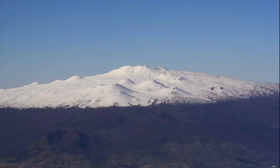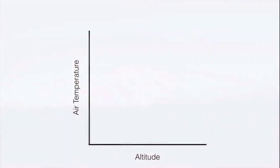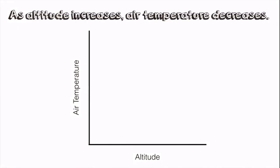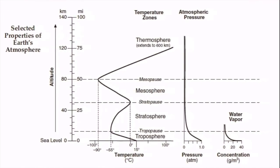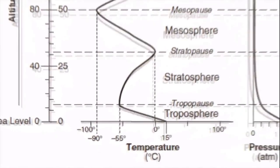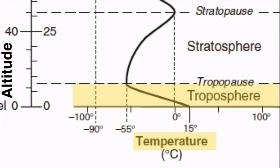Temperature decreases with altitude. If I were to look at that as a graphing relationship, as altitude increases, air temperature decreases — so this is an indirect relationship. Referencing back to the atmosphere diagram, the temperature line in the troposphere goes from 15 degrees Celsius at the surface to negative 55 degrees Celsius at the top, which is pretty cold as you go up.